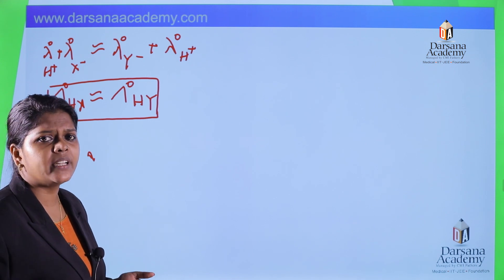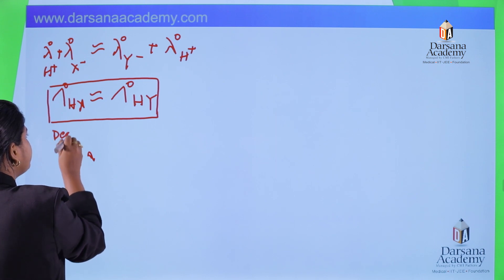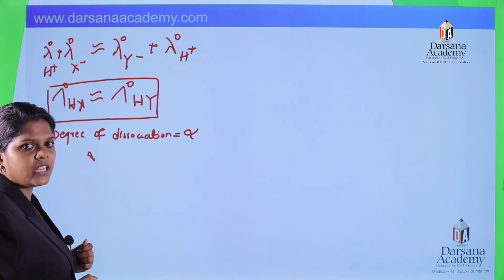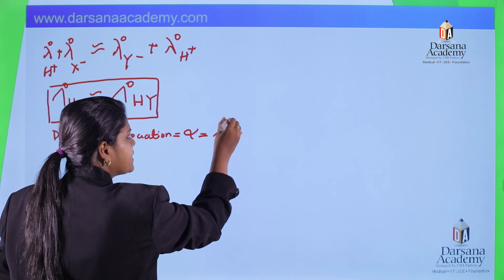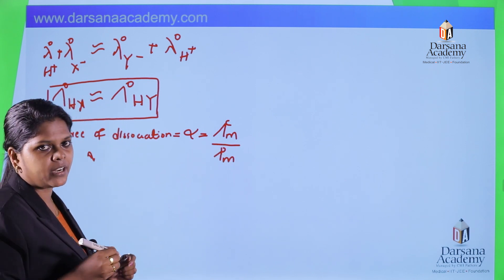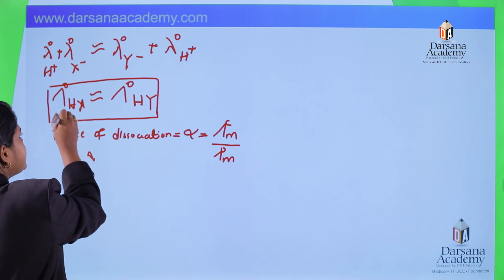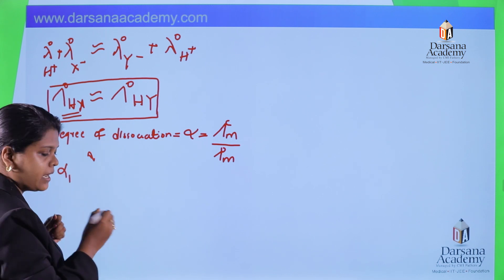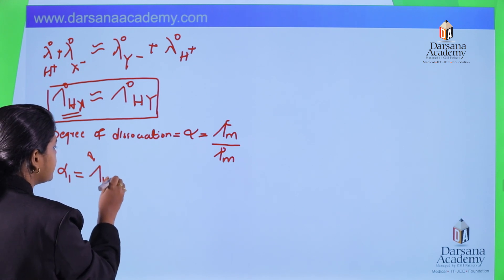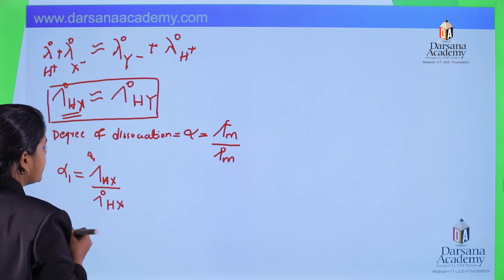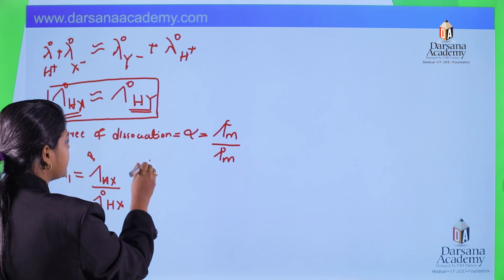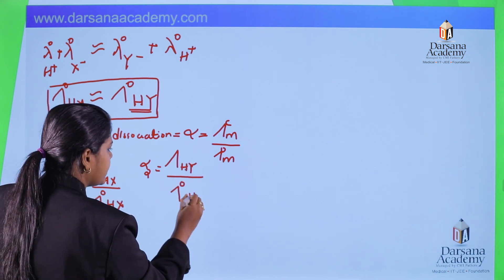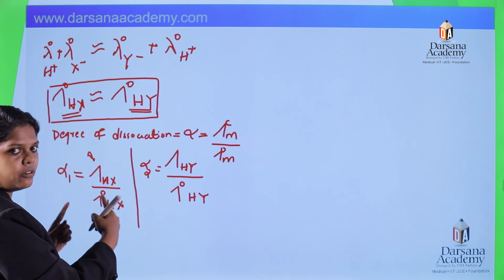From this equation we derive the degree of dissociation, represented by alpha (α). Alpha equals molar conductance at any concentration divided by molar conductance at infinite dilution. For HX, α₁ = λ(HX) / λ°(HX), which is also equal to λ(HX) / λ°(HY) since λ°(HX) ≈ λ°(HY). Similarly we define α₂ for HY.